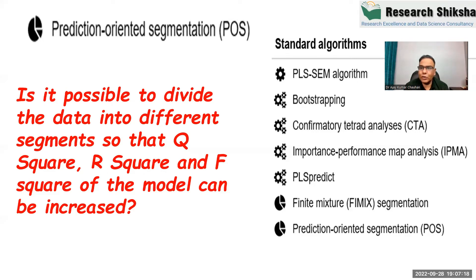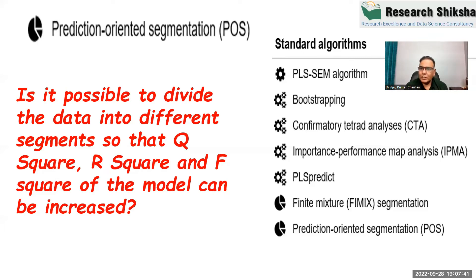Prediction-oriented segmentation divides the data into different groups in such a way that for each individual group, the R square is higher than the overall model, and the Q square of the different groups are higher than the overall model. This is the basic logic of POS segmentation.